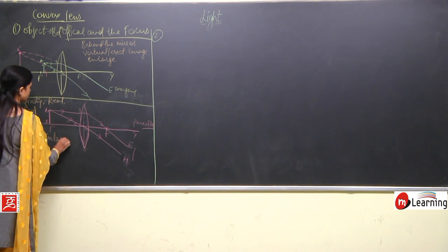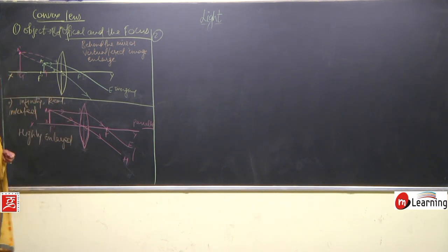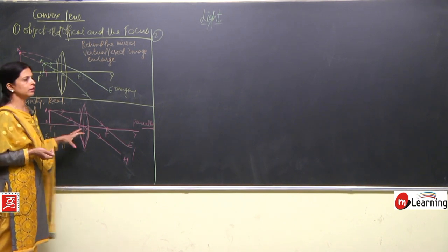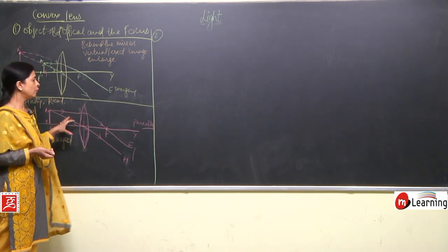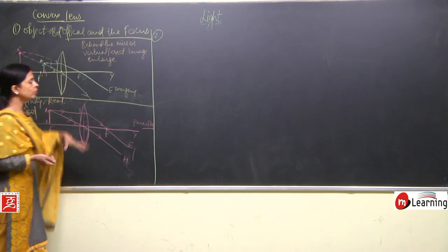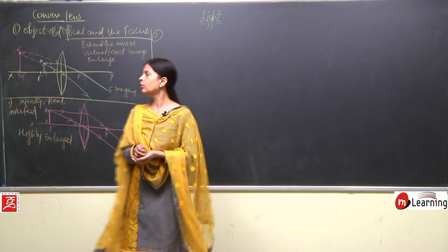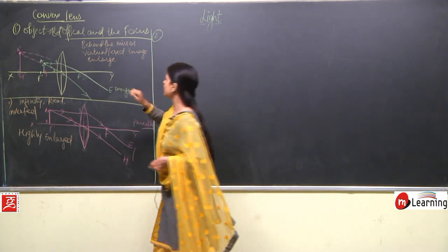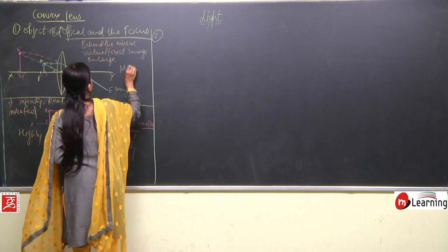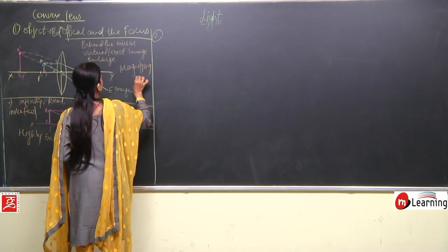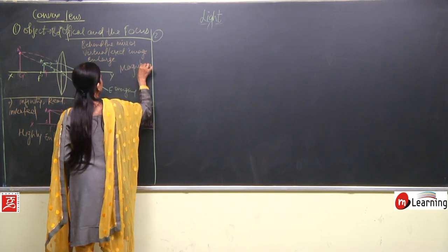I cannot draw it because the image is formed somewhere at infinity. This is how we have seen the second image formation. Now, what is the use of all this? This case is used in a magnifying glass — it is used in magnifying lens.